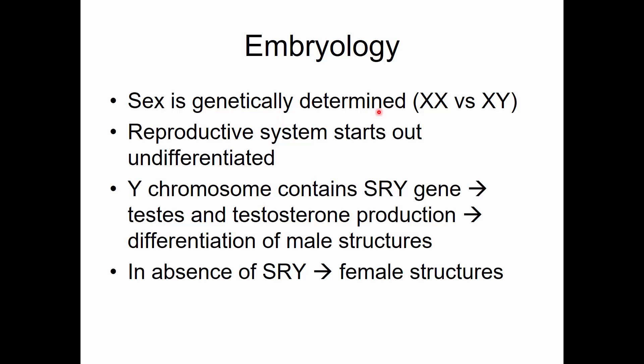Sex is genetically determined. If an embryo receives an X and an X, that's the genotype, and the phenotype is femaleness. If an embryo is genotypically XY, then phenotypically they are male. In embryonic development, the reproductive system starts out undifferentiated or androgynous. There are two sets of tubing — male tubing and female tubing — and a set of gonads, but early on you can't tell if the organism will be male or female.